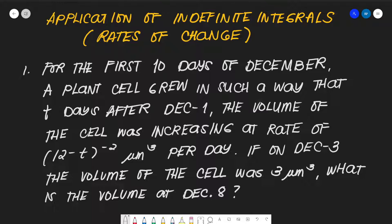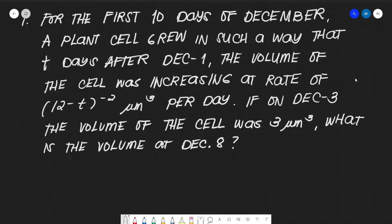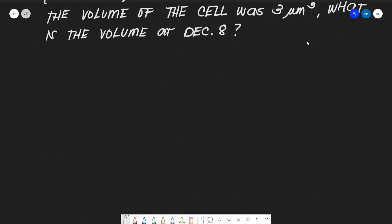For our first problem: for the first 10 days of December, a plant cell grew such that t days after December 1, the volume of the cell was increasing at the rate of (12 - t)^(-2) cubic micrometers per day. If on December 3 the volume was 3 cubic micrometers, what is the volume at December 8?